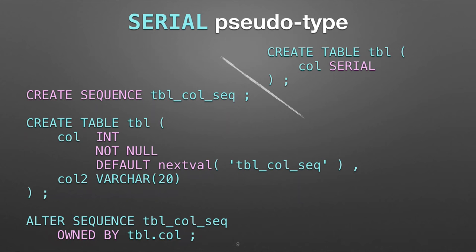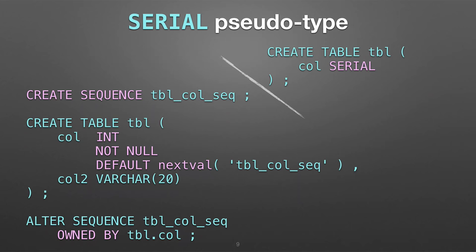And then it does this ownership business. After creating the sequence, it modifies the sequence to add an ownership to the column. This was a feeble way to track that this has serialness to it. The whole problem with serial is that it isn't tied — after this is done, there's no serialness left. It's not a property on the column anymore. That's what's misleading — when you see that, you think 'that's a column of type serial,' but it's not. That's where a lot of the problems stem from.